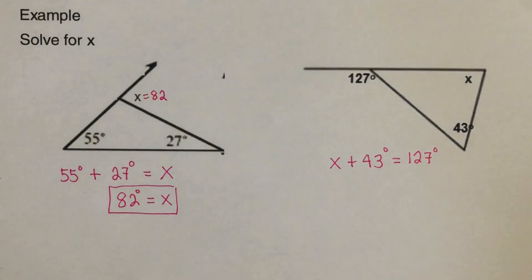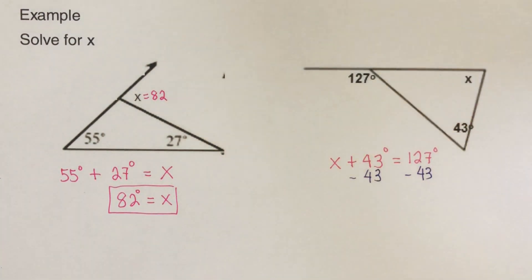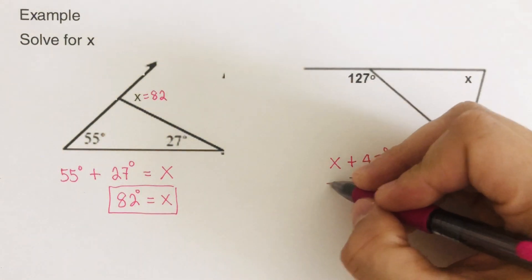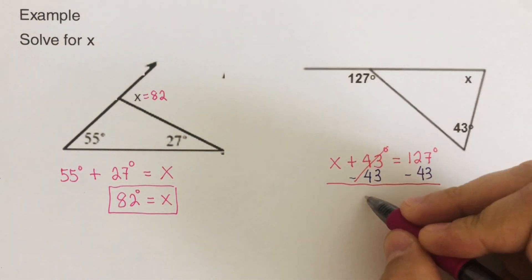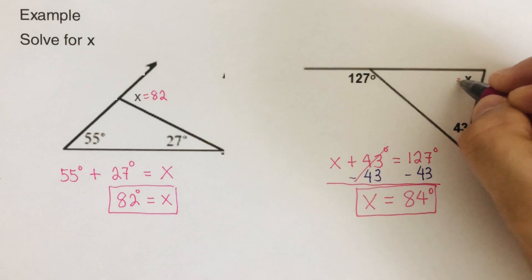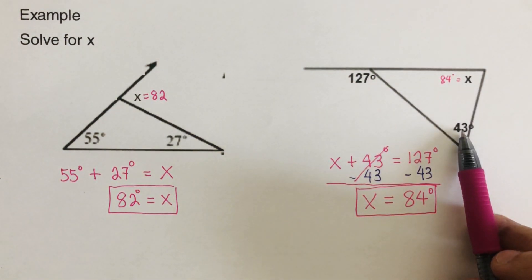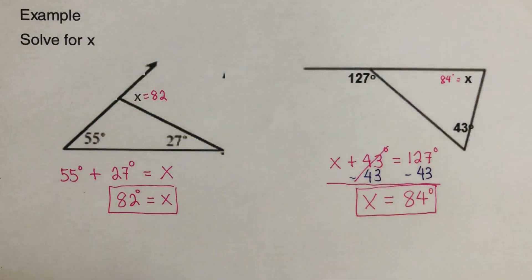So then from here, we subtract 43 from both sides. So minus 43 and minus 43. So then we can cross the 43 out. So we are left with x equals 84 degrees. So the measure of this angle right here is 84. And that makes sense because if we add 84 plus 43 is 127.